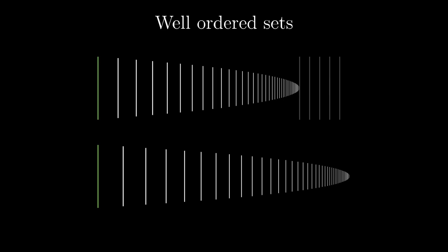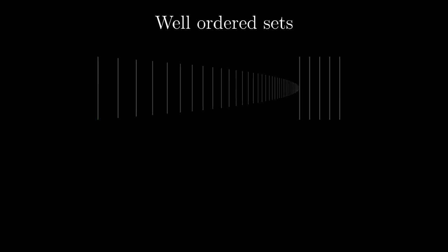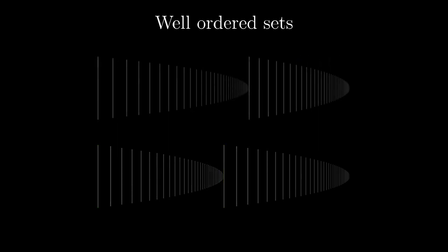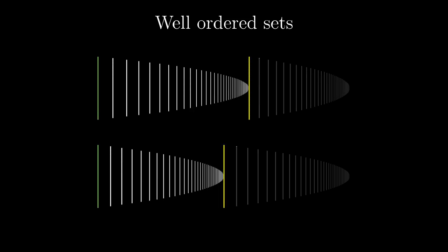Either the recursion fills the entire second set and the proper initial segment of the first one, or vice versa, the first set is filled and some bars of the other one remained, or the transfinite recursion finishes both of them at the same time.